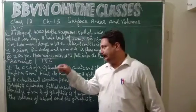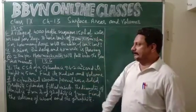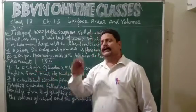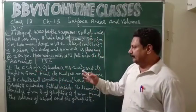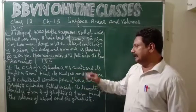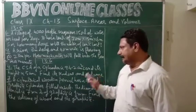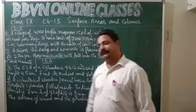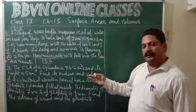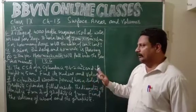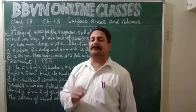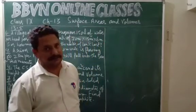Next, exercise 13.6, question number 4. It says the curved surface area, or the lateral surface area, of a cylinder is given as 94.2 centimeter square and its height is 5 centimeters. We have to find the radius of the base and the volume of the cylinder. Here we will consider pi is equal to 3.14.